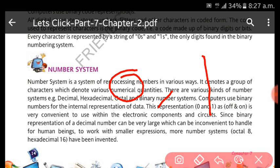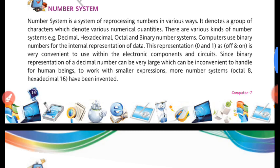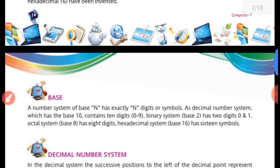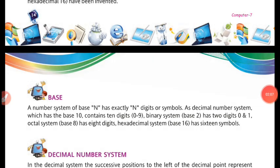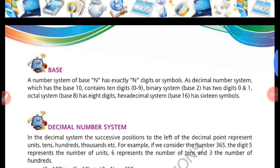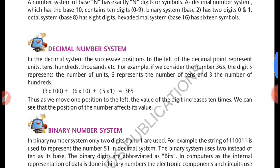A number system of base N has exactly N digits or symbols. In decimal, base 10, it contains digits zero to nine. In base two, two digits: zero and one. In base eight, eight digits: zero to seven. In hexadecimal, base 16, we use symbols 0 to 9 and A to F.